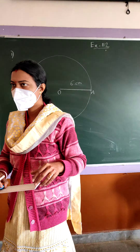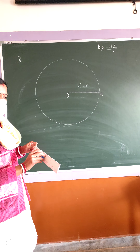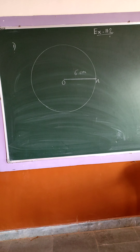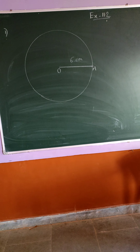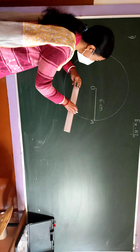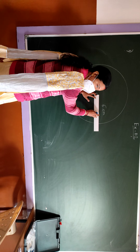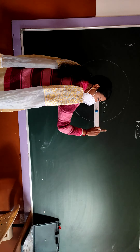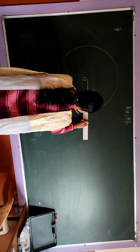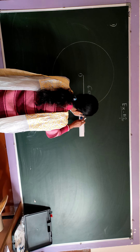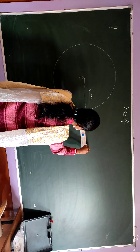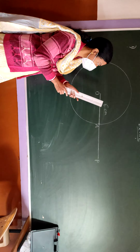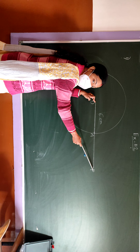Have you drawn? Now from the center O, where you have taken the radius 6 centimeters, take a point P from center O such that OP equals 10 centimeters.